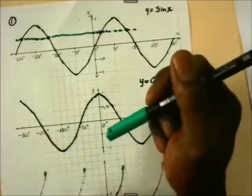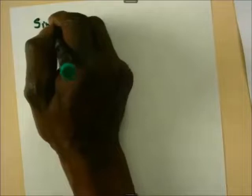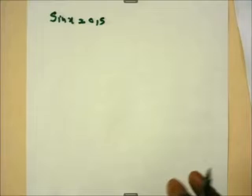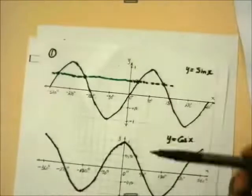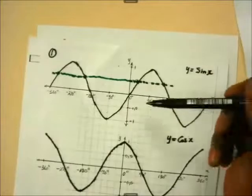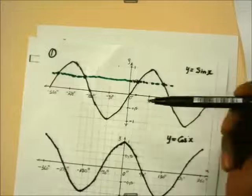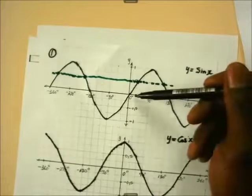As you can see, this horizontal line here is going to cut this graph of y equals sin x at this point, at that point, at that point, and at that point. But if we keep on drawing this curve up to infinity, we will have an infinite number of solutions for this particular problem, which is sin x equals 0.5.